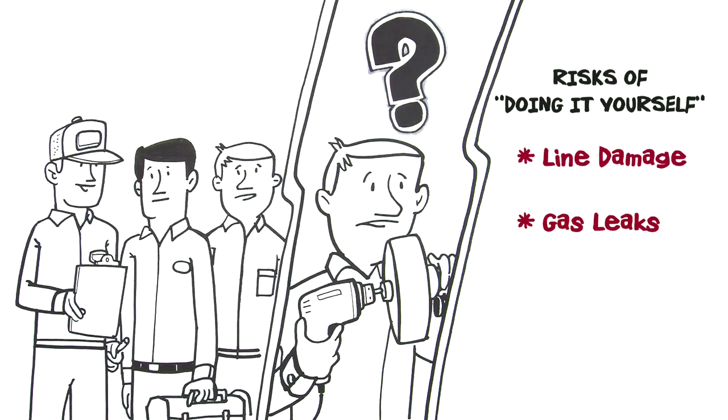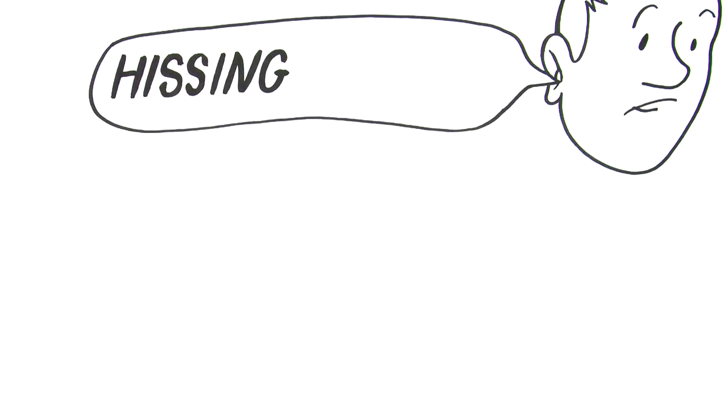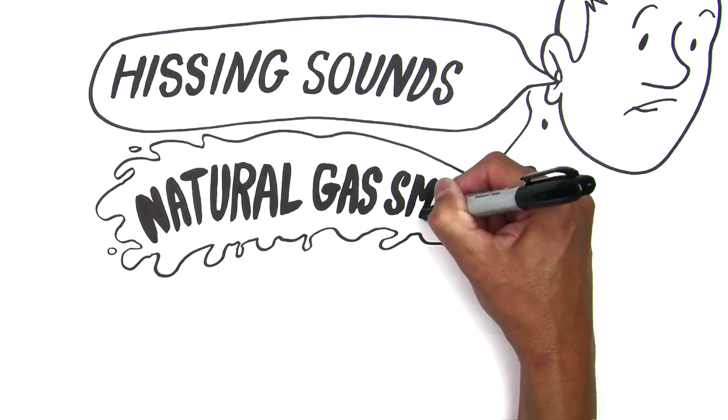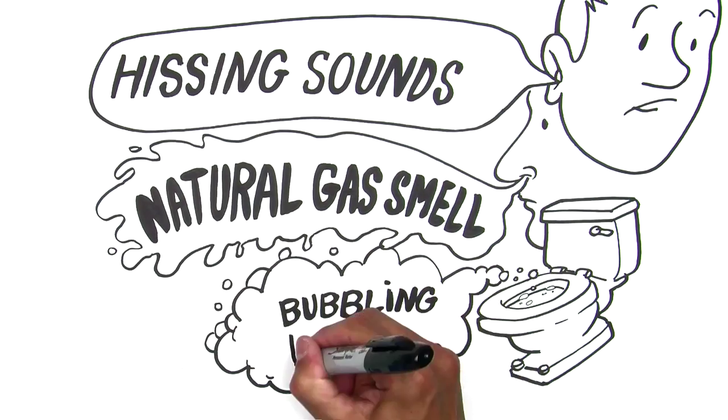Natural gas is flammable and a simple spark can start a fire or other serious incident. The technician hands Steve a safety brochure which lists the signs of a natural gas leak. Things like hissing sounds, natural gas odor, bubbles rising in standing water, possibly in the toilet.